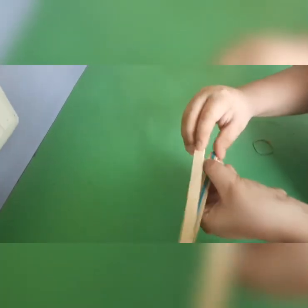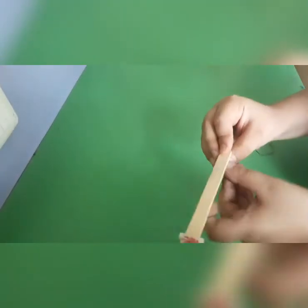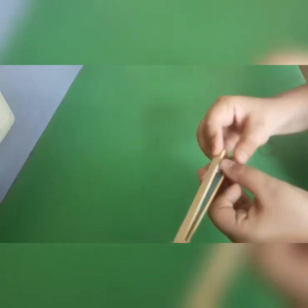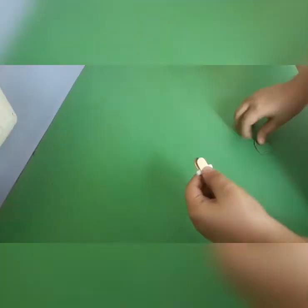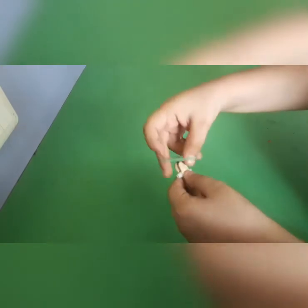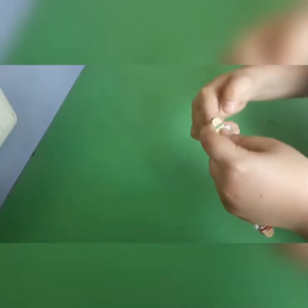Then again, take the popsicle stick and then lock it with another rubber band over here. Make some loops.